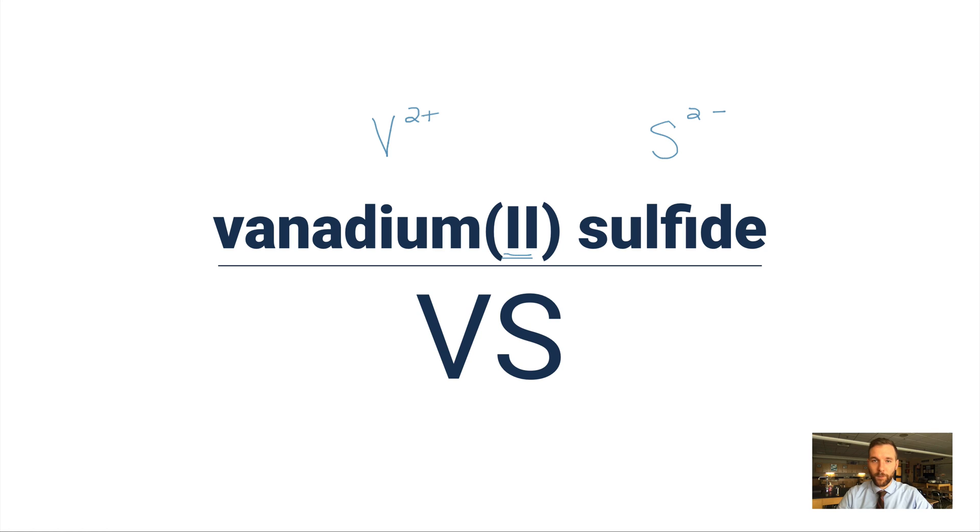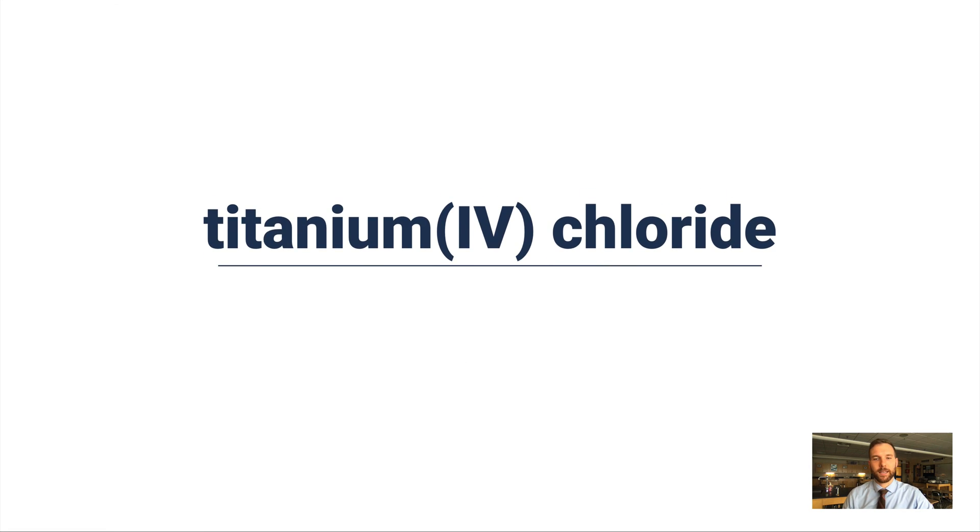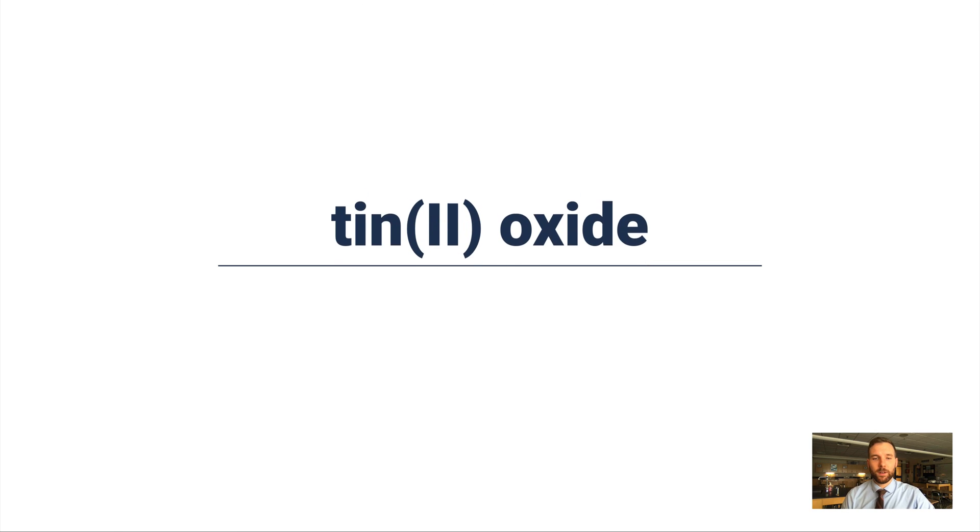Here's another example: titanium(IV) chloride. Titanium is Ti and that's a plus 4, chloride is minus 1 because it's in group 17, so I end up crisscrossing and I get TiCl₄.